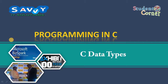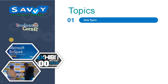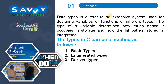The fourth category is enum datatypes, which are actually classified under user-dependent datatypes, so basically it comes down to three categories. Datatypes in C refer to an extensive system used for declaring variables or functions of different types. The type of a variable determines how much space it occupies in storage and how the bit pattern stored is interpreted. They are classified into basic datatypes or primitive datatypes.